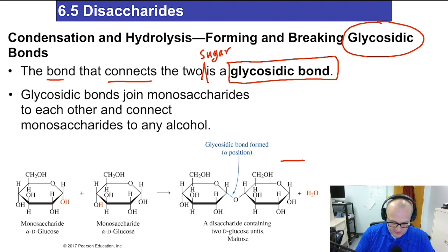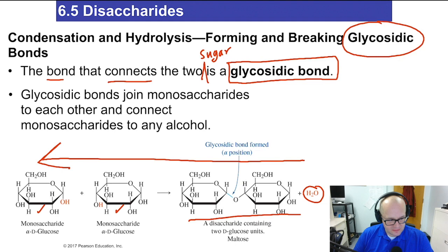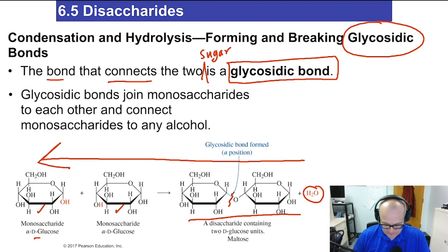Now if we were to go the opposite direction through the reaction, here we have water reacting with our disaccharide to make two monosaccharides — so this is a hydrolysis reaction. Water is breaking that bond to make two monosaccharides, both glucose in this case. So forming the glycosidic bond is a condensation reaction; breaking the glycosidic bond is a hydrolysis reaction.